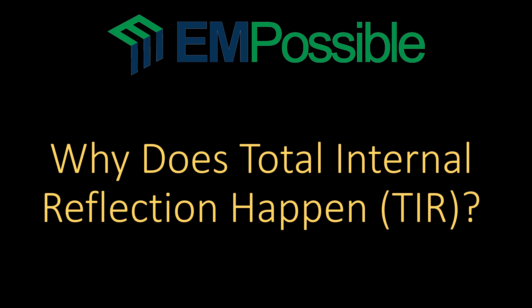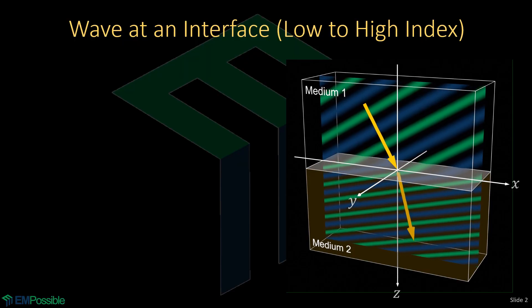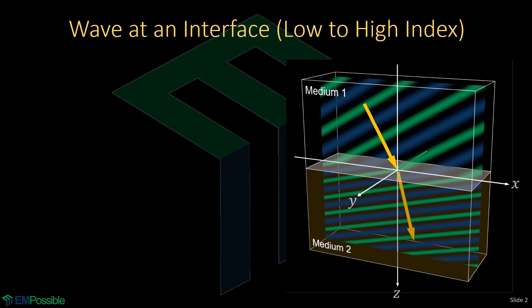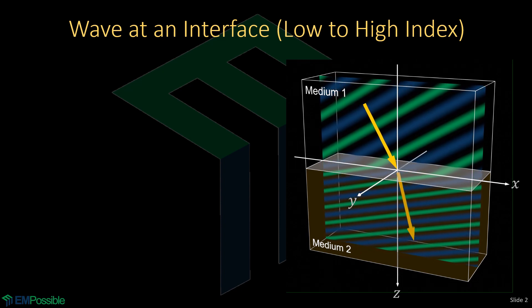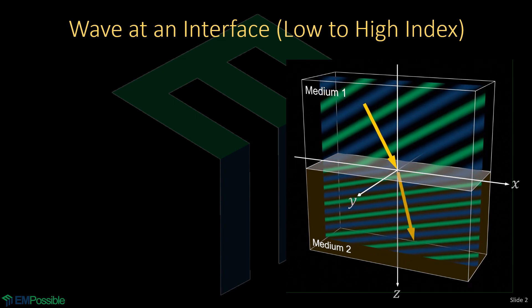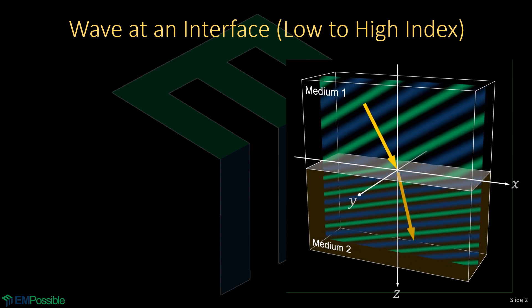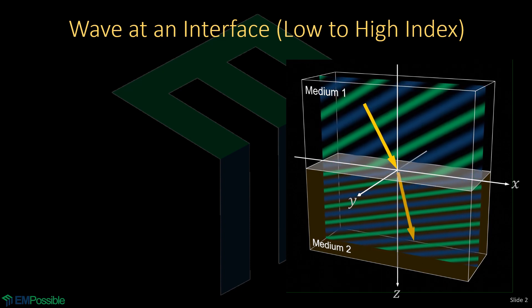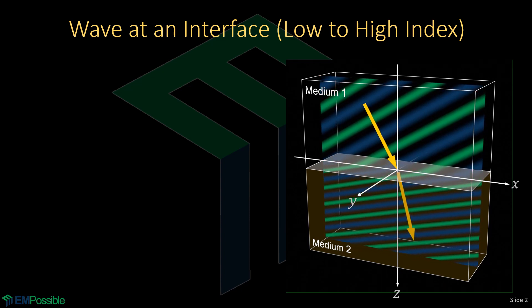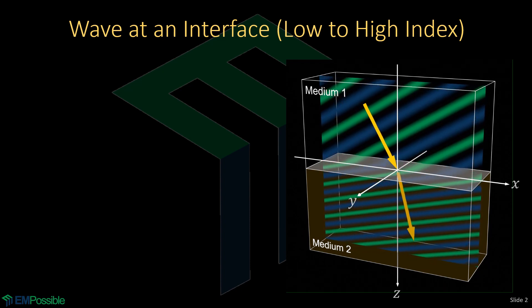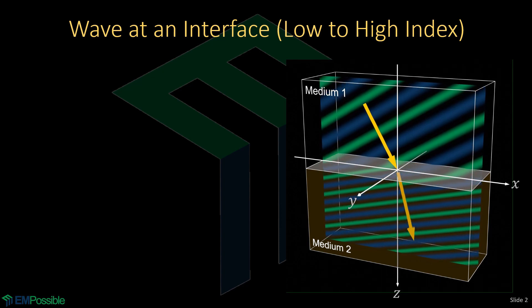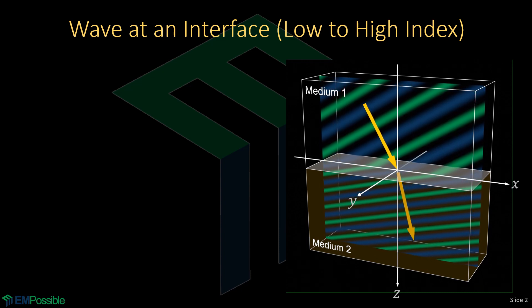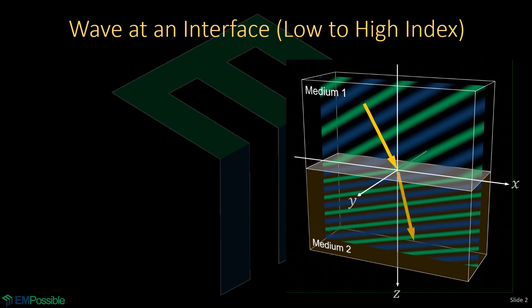Why does total internal reflection happen? Here's the basic setup we'll be looking at. We have some wave in a first medium that encounters a second medium. Some of that may transmit, some of it may reflect. The reflected wave isn't shown here because it's not too important to the physics of what's happening, and it would complicate the picture.